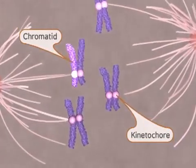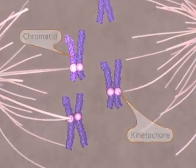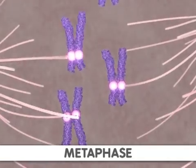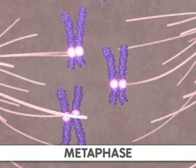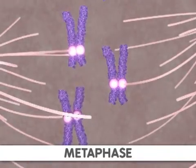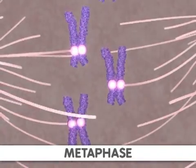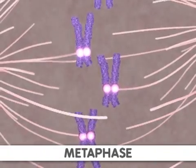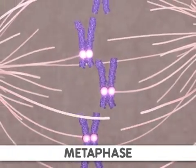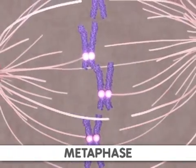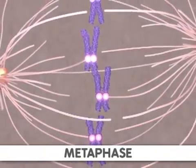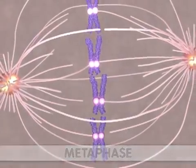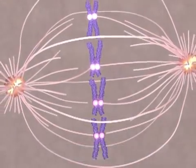Next comes metaphase. During this stage, the sister chromatids align along the center of the cell so that both chromatids face toward opposite poles of the cell. Now the sister chromatids are ready to be separated.